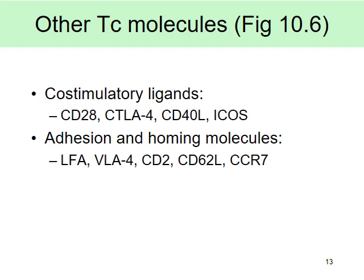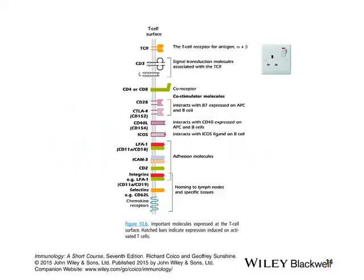Looking at the T cell surface: it has a TCR alpha-beta, a CD3 receptor, and the zeta chain — all three together like a switch requiring three prongs. Then there's a co-receptor — either CD4 or CD8. These are the co-stimulatory molecules, also functioning as adhesion and homing molecules, exactly the same as in B cells. Your challenge is to figure out which molecules are present on T versus B cells.